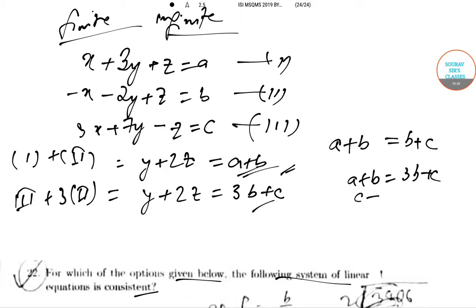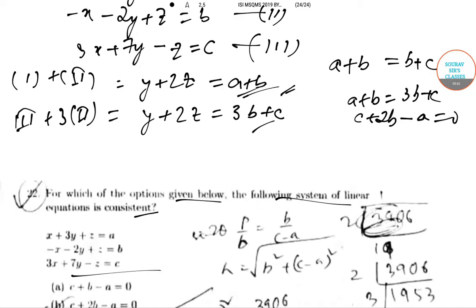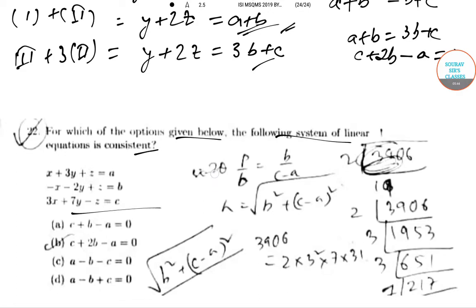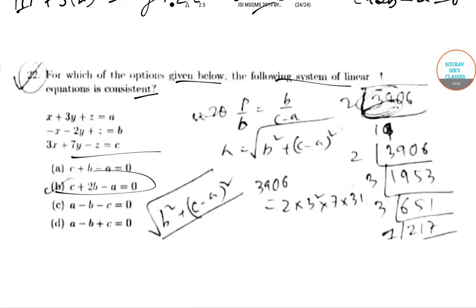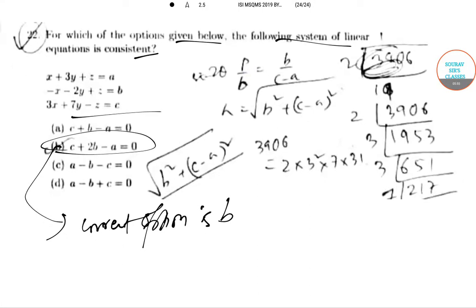So a + b = 3b + c, which means c + 2b - a = 0 is the correct option. The correct option is B. We have solved ISI MSQMS 2019 paper questions 21 and 22.